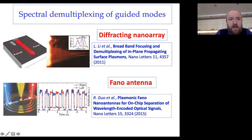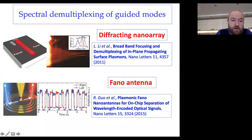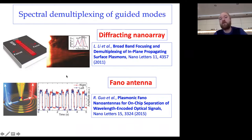In one work, focusing and demultiplexing of SPP is realized using a phased array antenna — particles placed on metal — where incident light from a grating excites SPPs of different wavelengths focused to different spots. In another work, a micro-disk with a defect enables exciting guided light to the left or right depending on the wavelength. There are many such examples. In our work, we use all-dielectric particles with high refractive index, like silicon, gallium phosphide, or aluminum gallium arsenide, for excitation of surface plasmon polaritons.